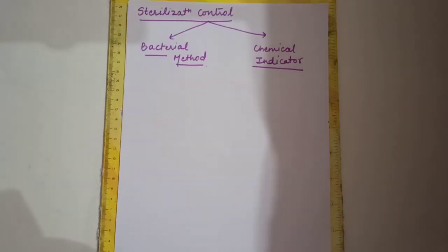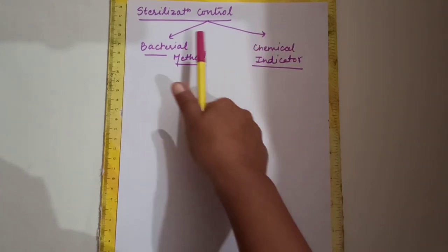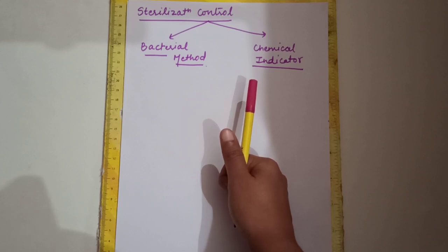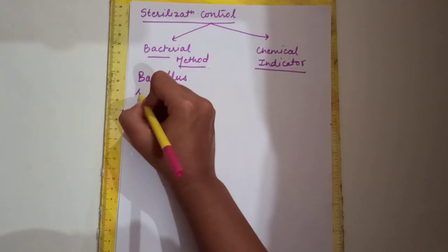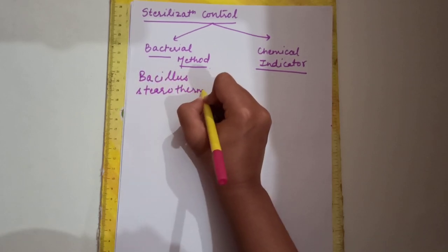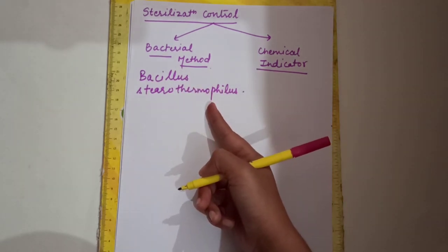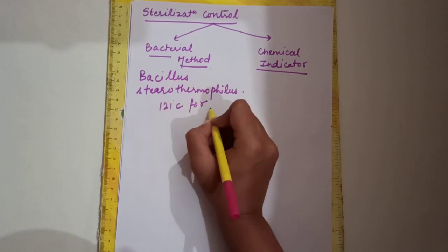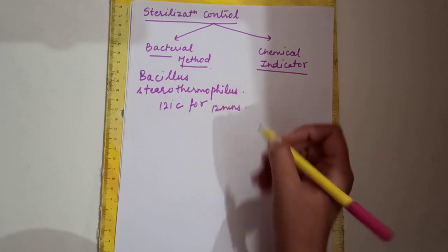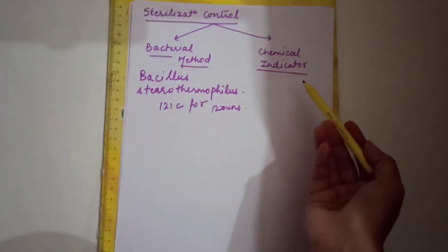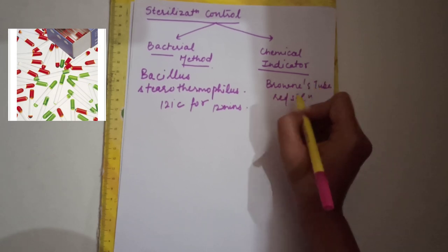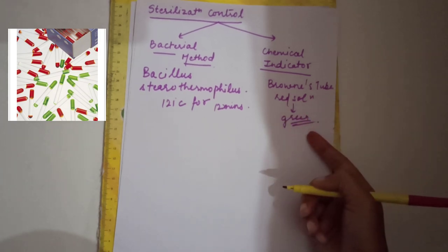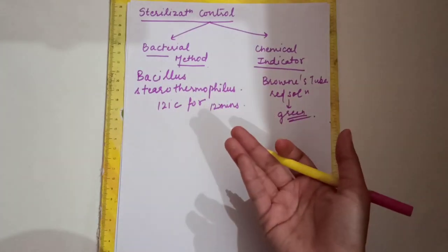For sterilization control of autoclave — to check whether it is functioning correctly — we have two methods: a bacterial method and a chemical indicator. In the bacterial method, spores of Bacillus stearothermophilus are placed inside; if they are destroyed at 121°C for 12 minutes, it indicates the autoclave is functioning properly. For the chemical indicator, Brown's tube with a red solution is used; after sterilization it turns green, indicating correct functioning.